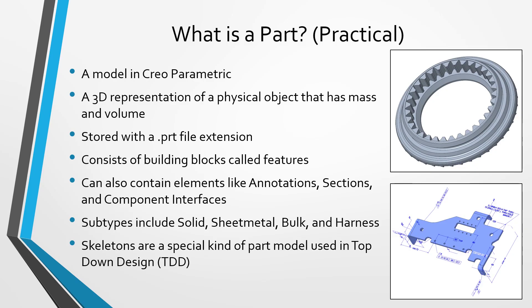Besides these features, parts can also contain other objects like annotations — as you see in the image in the bottom right-hand corner — which provide what's called PMI, product and manufacturing information, to explain how the parts should be built and inspected. Parts can also contain cross sections and things called component interfaces to define how they are placed inside of larger models called assemblies.